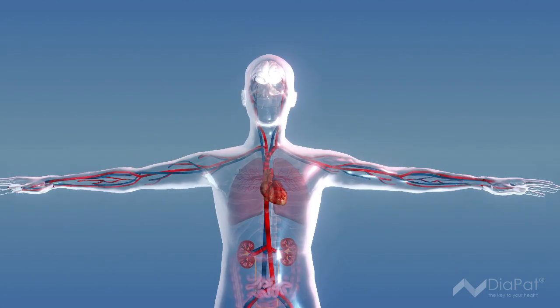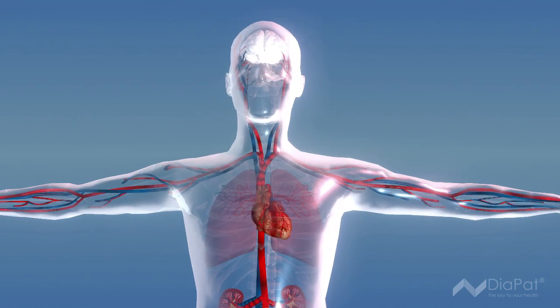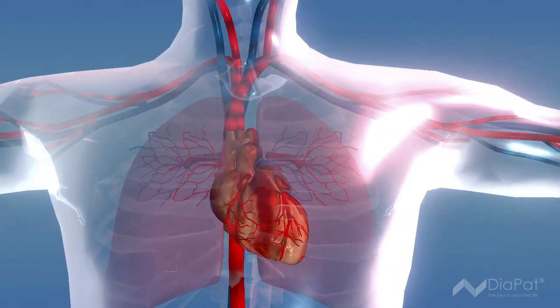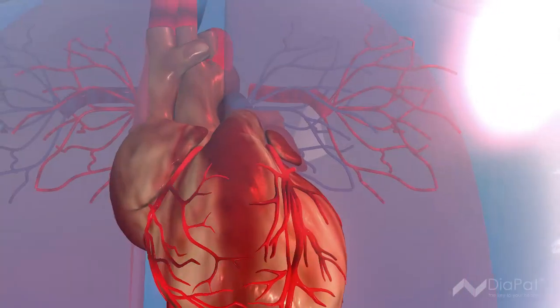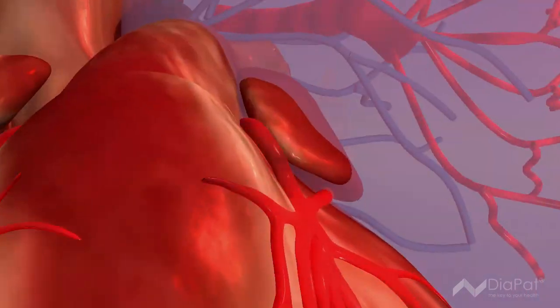Atherosclerosis is a condition in which fat deposits, known as plaques, build up inside the arteries and narrow them. This process also takes place in the vessels supplying the heart.